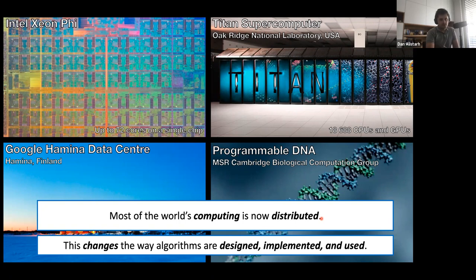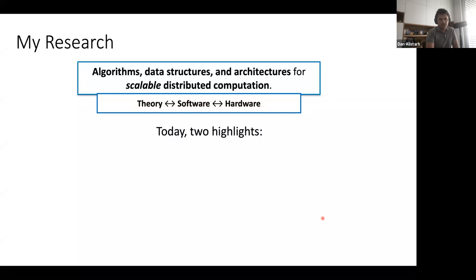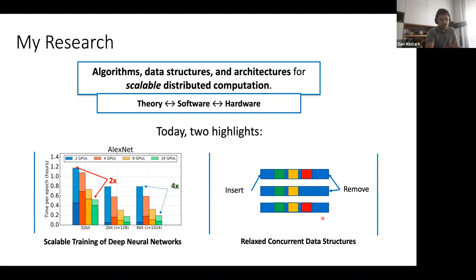My research is focused on algorithms, data structures, and architectures for scalable distributed computation. I try to steal nice ideas from theory and apply them into software, and sometimes we even have to look at hardware. Today I'll talk about two highlights: scalable training of deep neural networks, and relaxing concurrent data structures.